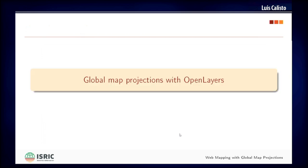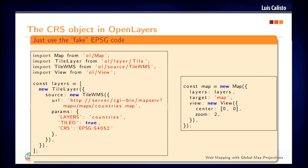In terms of OpenLayers, we can do something similar. You need to create an OpenLayers projection object and then apply that projection — just put the EPSG code — and apply it to your view. The request made to the server will put the right code, just like in Leaflet. If you apply it to the view, then all the layers will be requested with that EPSG code and handled by MapServer.